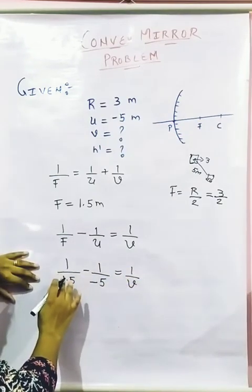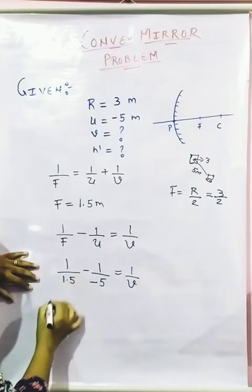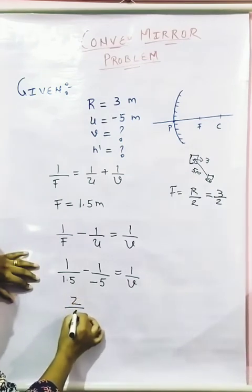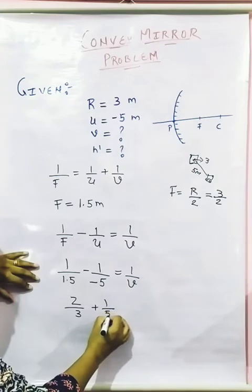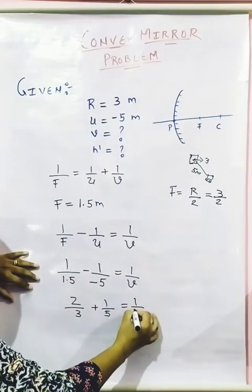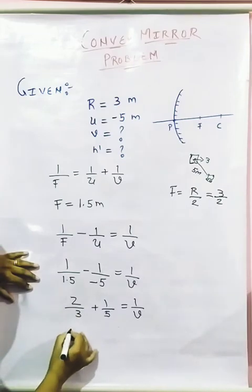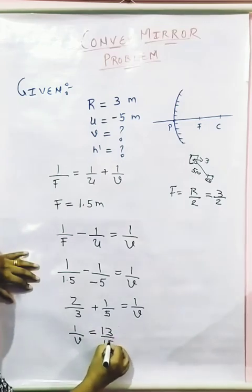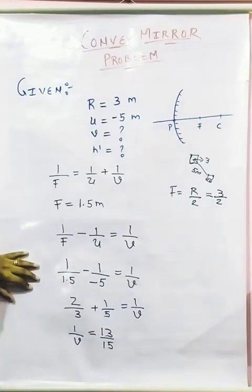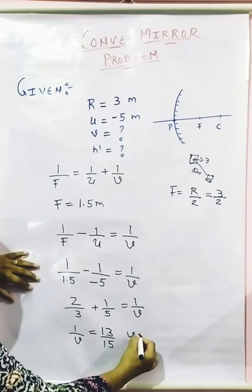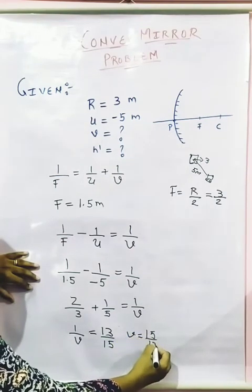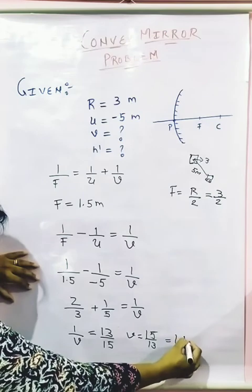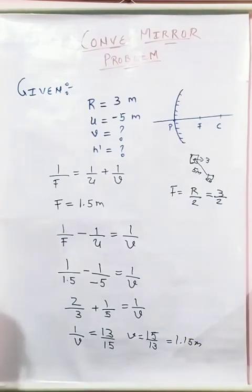So when you are going to take the LCM for this, after directly solving this, I am going to get 2/3 + 1/5 = 1/V. Now when I am going to do it, I will get 1/V = 13/15. This is my 1/V. So my V will be 15/13. So when you divide this, you are going to get 1.15 meter.